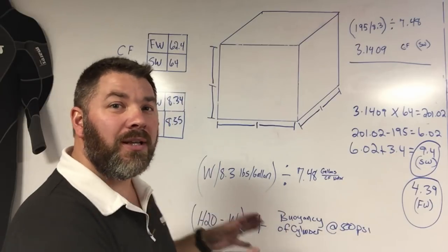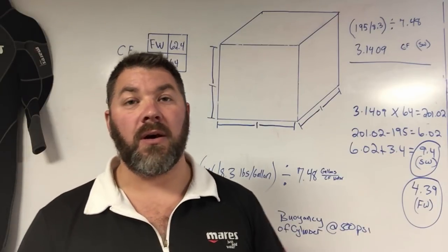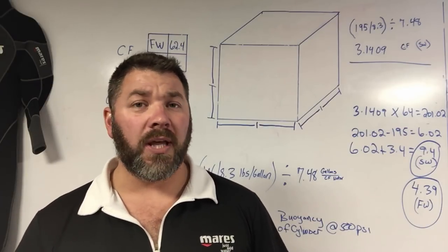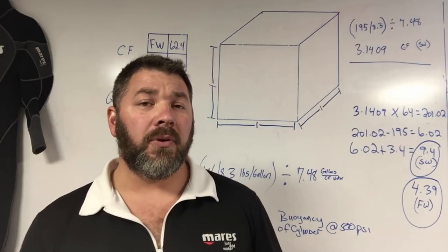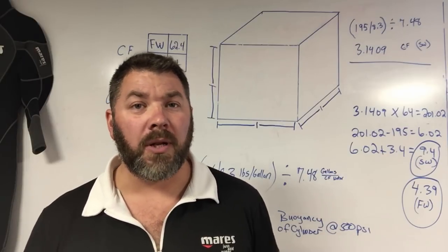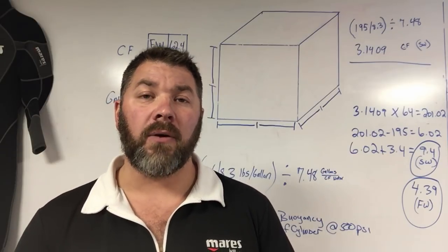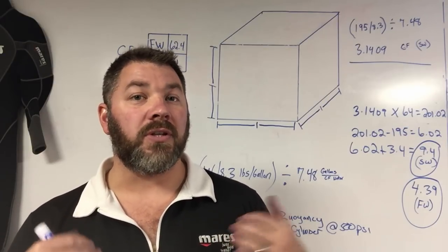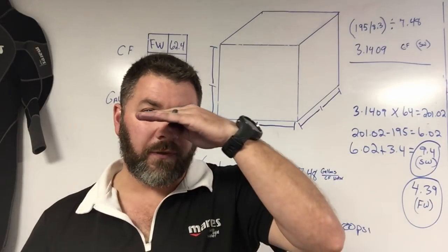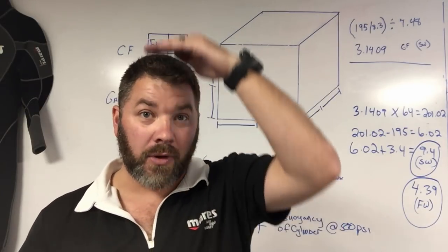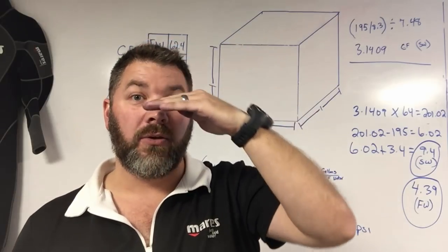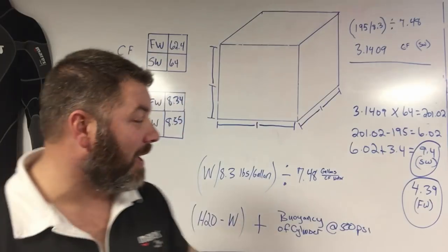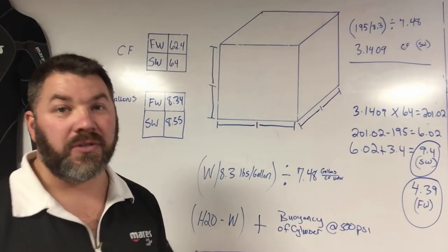Now once we've done this, it's so very important that you actually put this weight on and you do a proper weight test in the water, whether it's pool, lake, ocean, or whatnot. Simply put, you're going to get in the water with all your equipment on, you're going to put your weight on as well, and then with a completely deflated BCD and holding about three quarters lung volume of air, you should float about that eye level. When you exhale you'll go under. When you breathe back in you'll pop right back up. That's when you know that you're properly weighted.